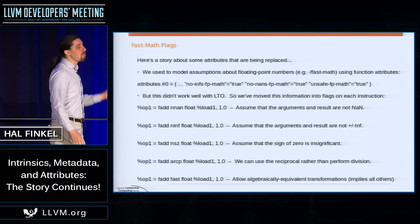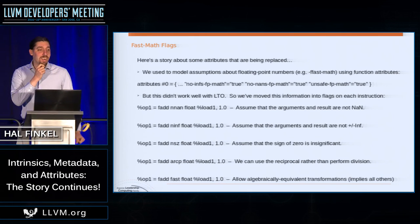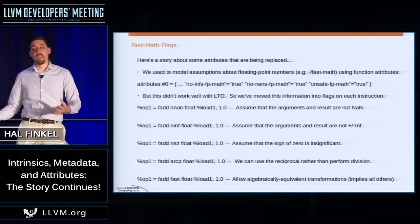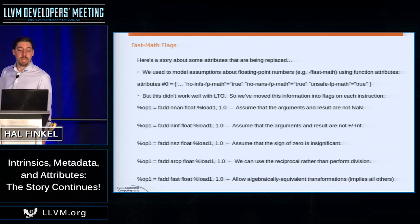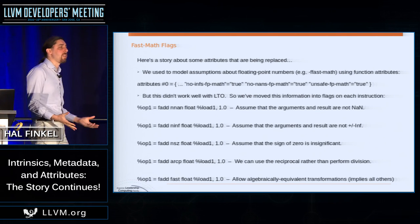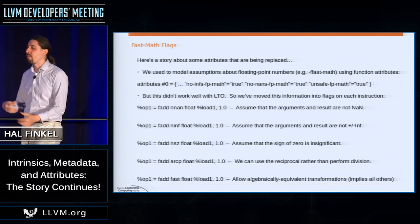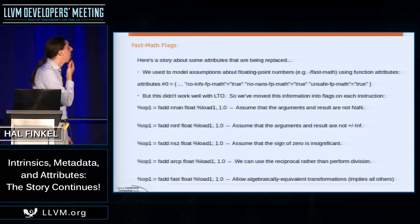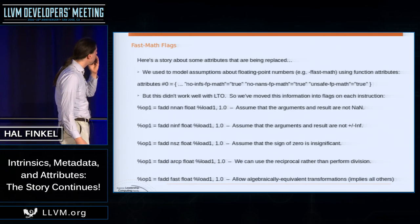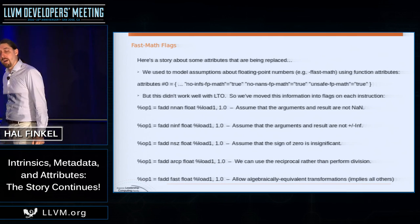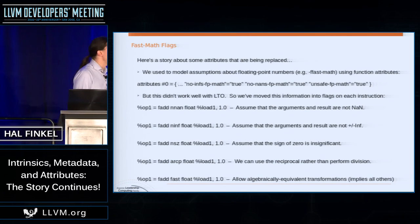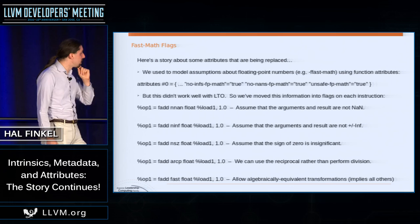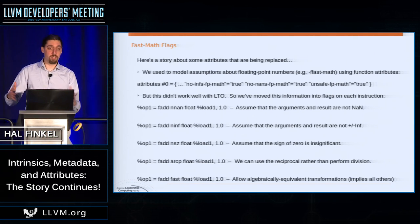Some attributes are going away rather than being added. We used to support fast math and floating-point assumptions like no-NaNs or no-infinities by adding attributes to functions, but this doesn't interact well with link-time optimization — either you must prevent inlining when attributes don't match, or you inline and lose or gain assumptions incorrectly. So we've moved these flags onto the instructions themselves. The old attributes still exist and you'll see them in IR, but the preferred representation is per-instruction flags like 'nnan', 'ninf', and 'fast' which implies all others.